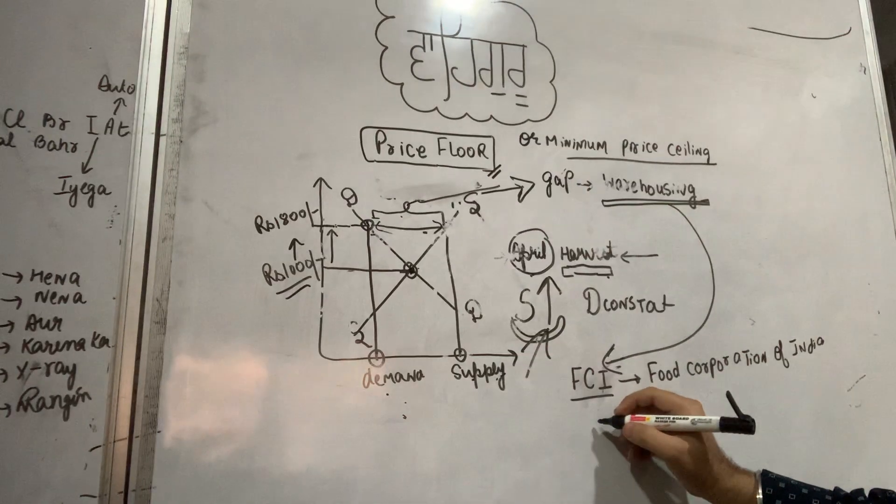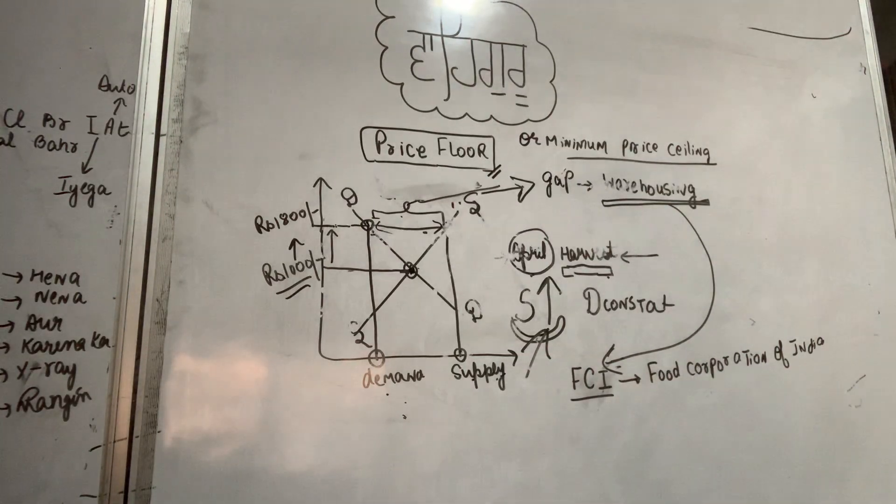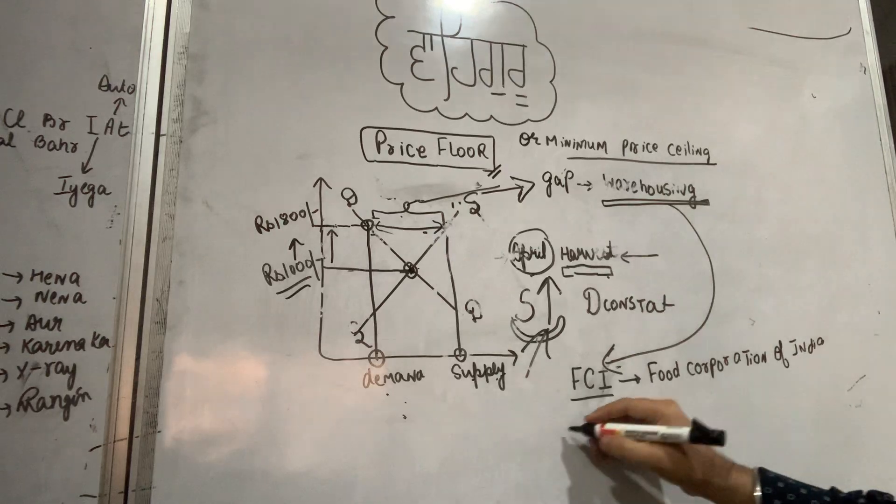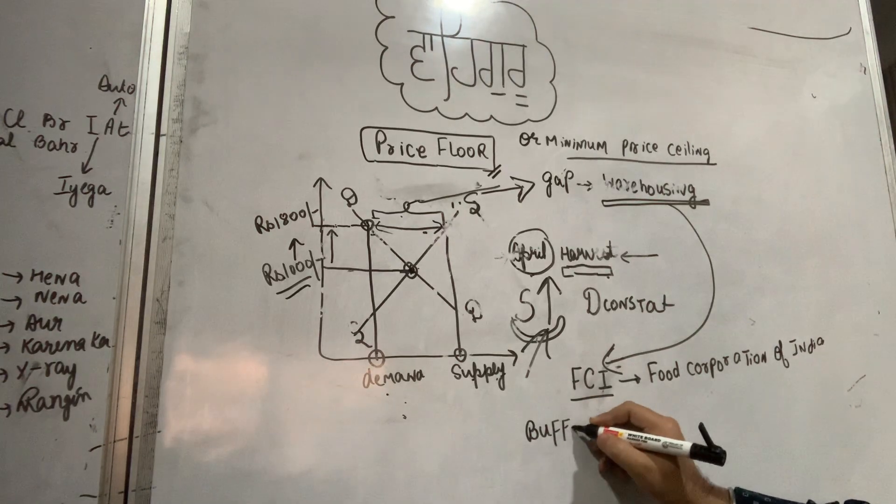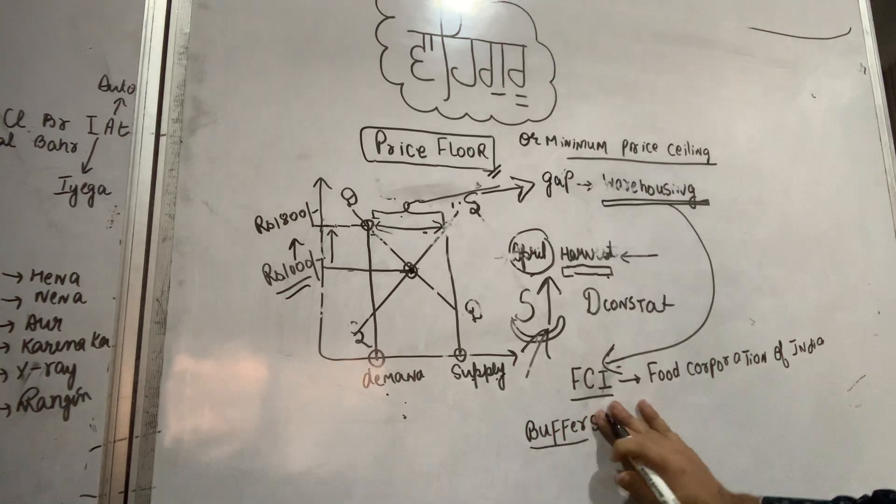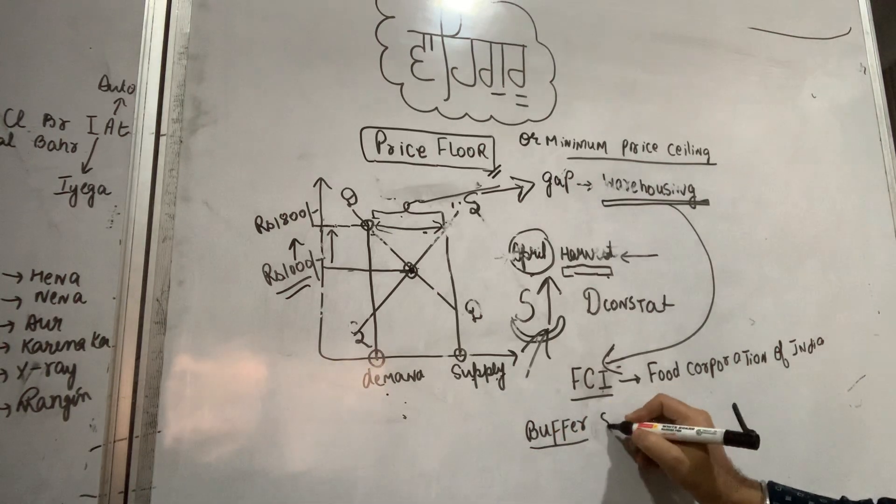Then, what does the government do with all the goods it has collected and stored in warehouses? These are Food Corporation of India godowns in your areas. All the farmers' goods that the government has stocked are called buffer stock. Whatever stock is in the godowns is called buffer stock.